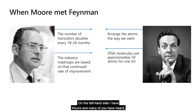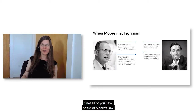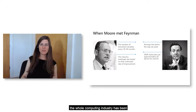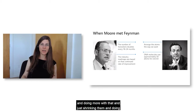Let me illustrate what I mean by changing the approach. Here I'm showing two icons of the computing era. On the left-hand side I have Moore. Many of you have heard of Moore's Law, which essentially states that the number of transistors doubles every so often. The whole computing industry has been relying on increasing the number of devices on a chip — just shrinking them and doing more with new devices.